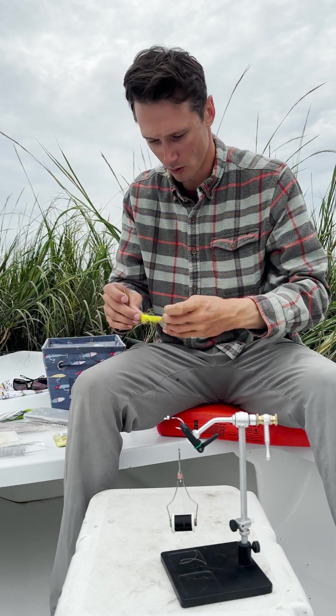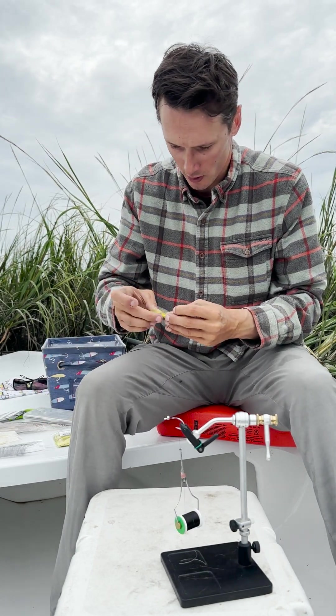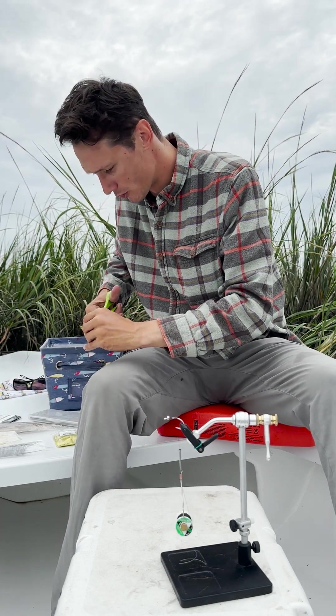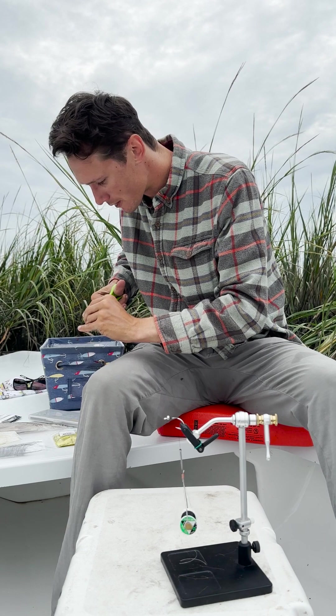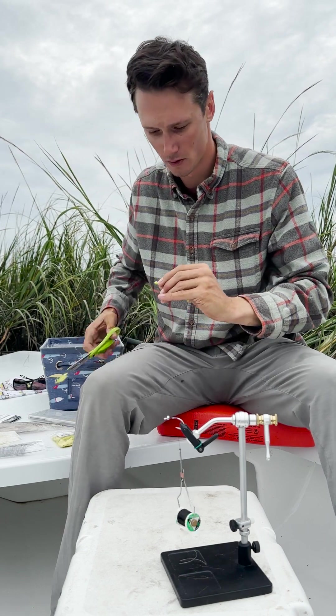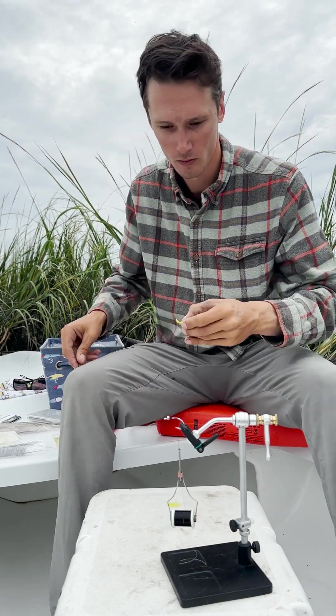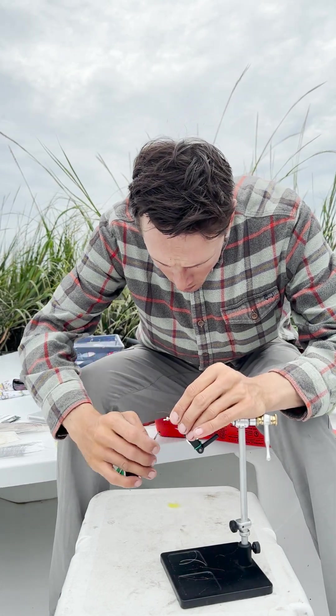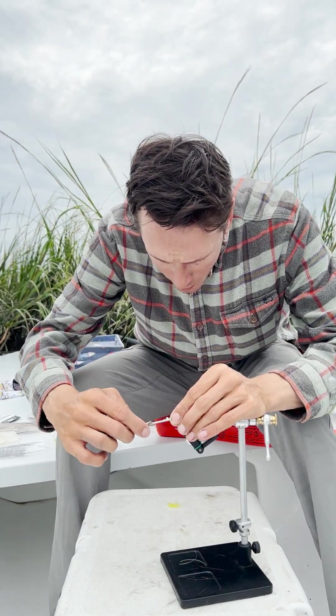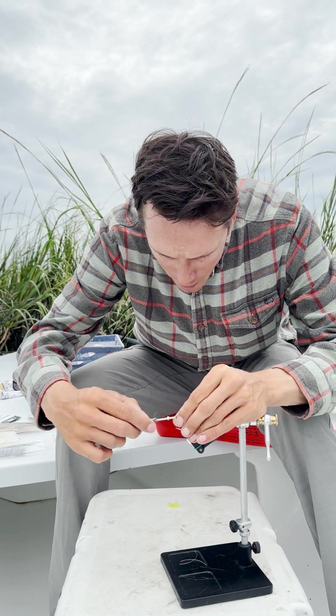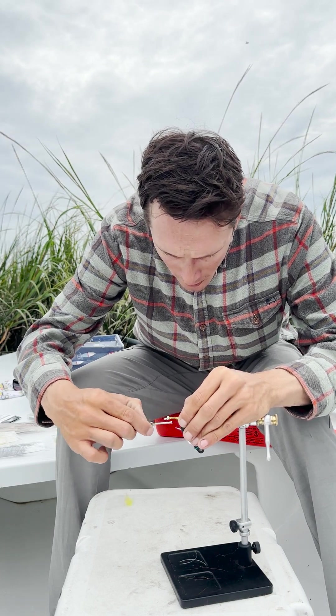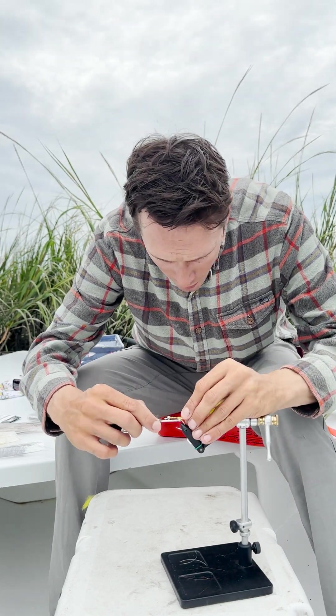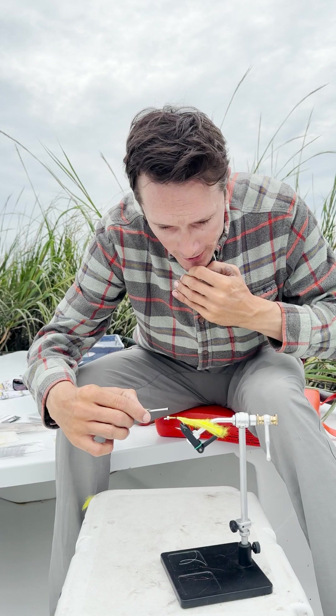Get out your yellow olive barred rabbit strip. Trim a little bit of the fibers off the end of that. I like to tie that in right up behind the eyes. I like to start with these a little long too, you can always trim that down in a second.